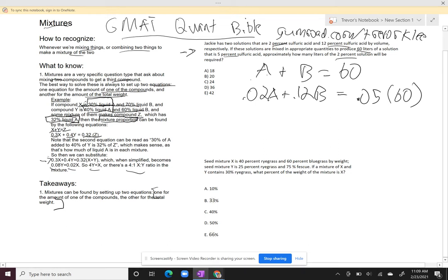Now I'm going to make my life a little easier here because I don't really like dealing with decimals, and I'm going to multiply everything by 100. So I'm going to get 2A plus 12B equals 5 times 60, right? Cool. Now I can start to substitute in.